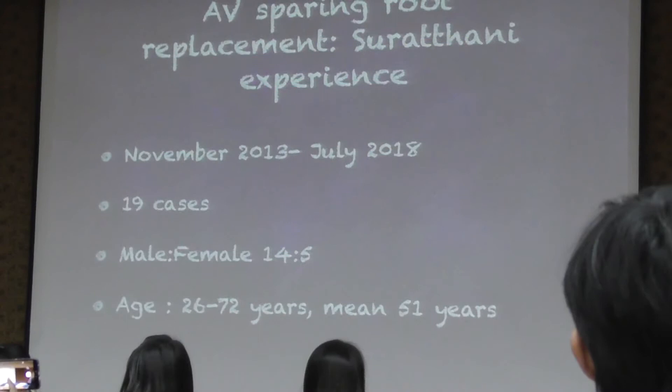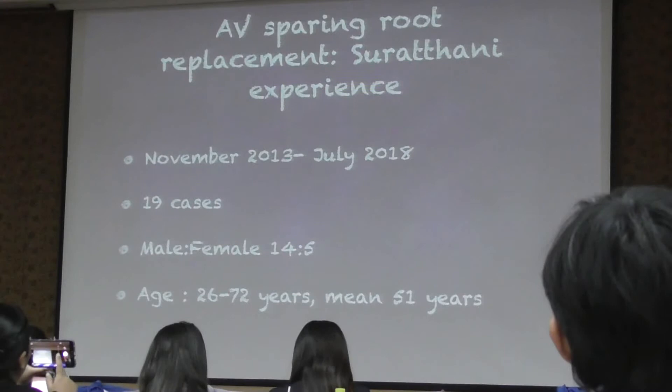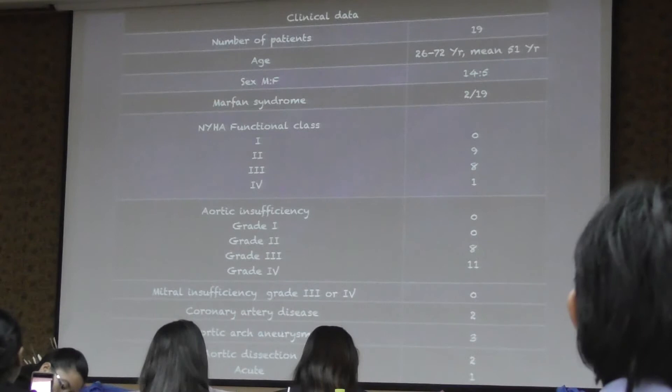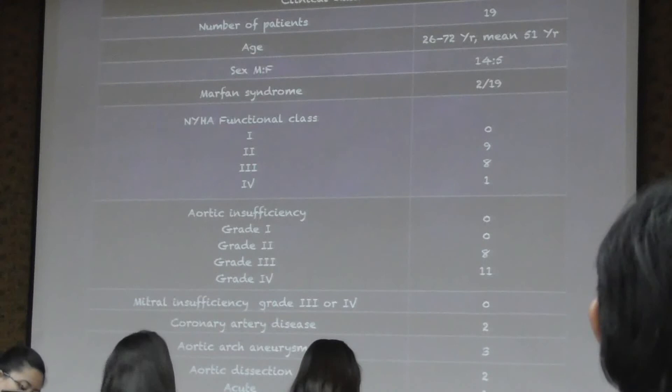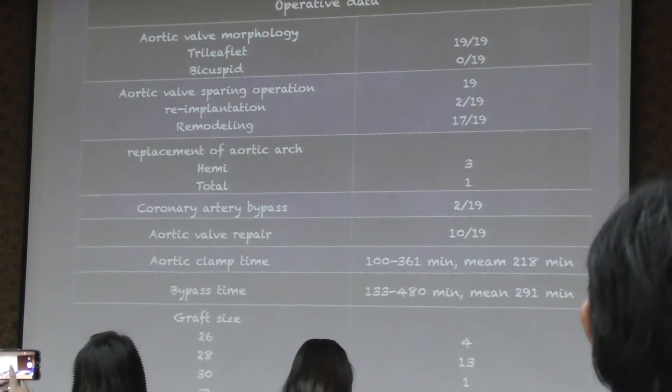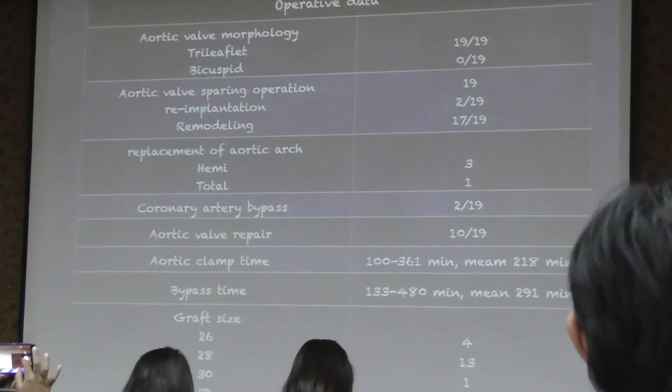From 2013 to 2018, I have performed about 19 cases. Most of the cases are male, about 26 to 32 years old. Most of the patients are in functional class two and three. We have two Marfan syndrome cases. All the cases are bicuspid aortic valve. In the first two cases, I did the re-implantation technique. After that, I changed to the remodeling technique.